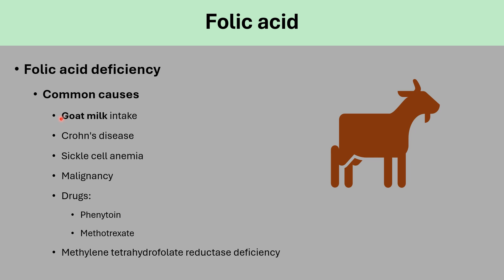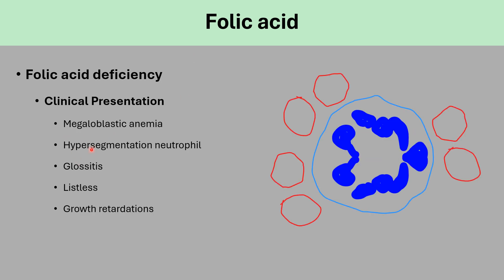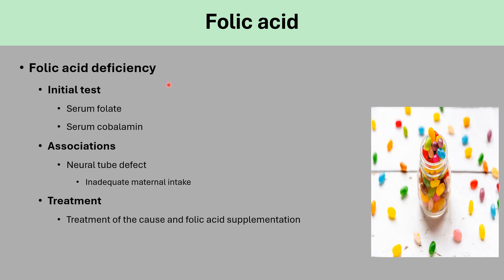Causes of folic acid deficiency: goat milk intake (high yield on the pediatric board), Crohn's disease, sickle cell anemia, malignancy, drugs such as phenytoin, methotrexate, and methylenetetrahydrofolate reductase deficiency. Clinical presentation: megaloblastic anemia, hypersegmented neutrophils (similar to B12 deficiency), glossitis, lethargy, and growth retardation. If a child has macrocytic anemia, you must test for both folic acid and B12 levels together, because treating folic acid deficiency with underlying B12 deficiency will worsen the condition. Association: neural tube defects due to inadequate maternal folic acid intake during or before pregnancy. Treatment: treat the cause and folic acid supplementation.